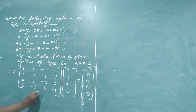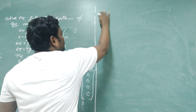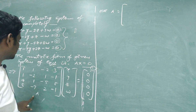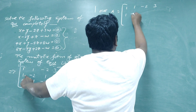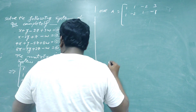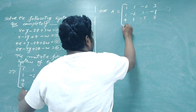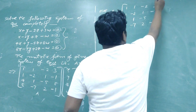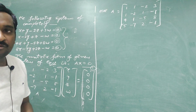Consider the coefficient matrix A and find its rank by reducing it to echelon form. The coefficient matrix A is written as: row 1: 1, 1, -2, 3; row 2: 1, -2, 1, -1; row 3: 4, 1, -5, 8; row 4: 5, -7, 2, -1. Now apply row operations to reduce it to echelon form.